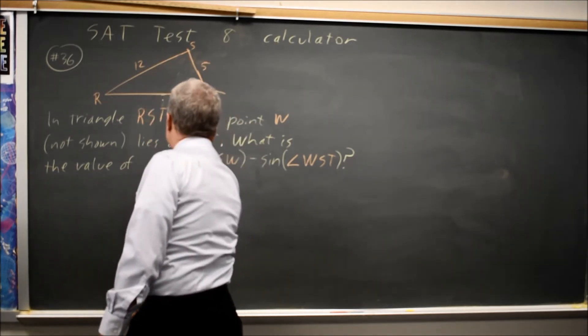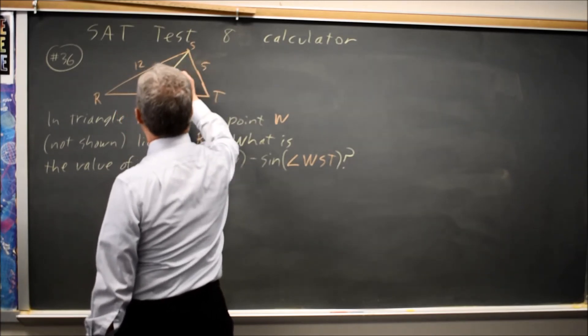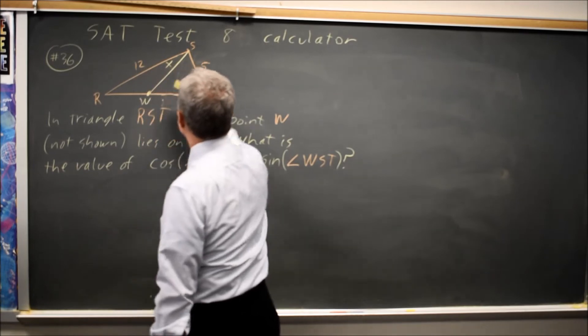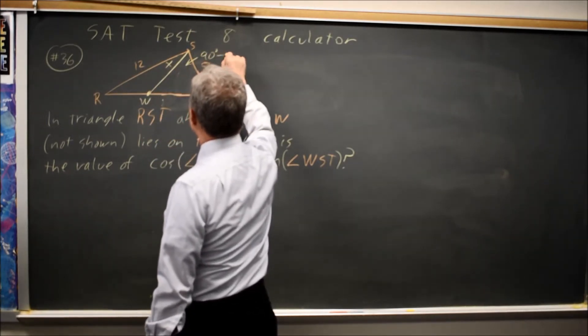Let's just choose an arbitrary point W, and I'll call this angle X. This other angle here is 90 degrees minus X.